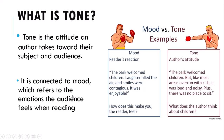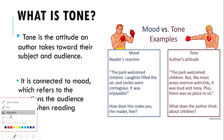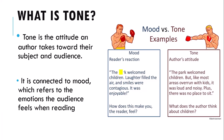For example — I'm going to get my highlighter — here I've got: 'The park welcomed children. Laughter filled the air and smiles were contagious. It was enjoyable.' We have words like laughter, smiles, contagious, enjoyable. The author is clearly having a good time. How would it make the reader feel? The reader might feel happy as well, thinking about a memory when they went to the park as a child or when they've taken their children to the park.